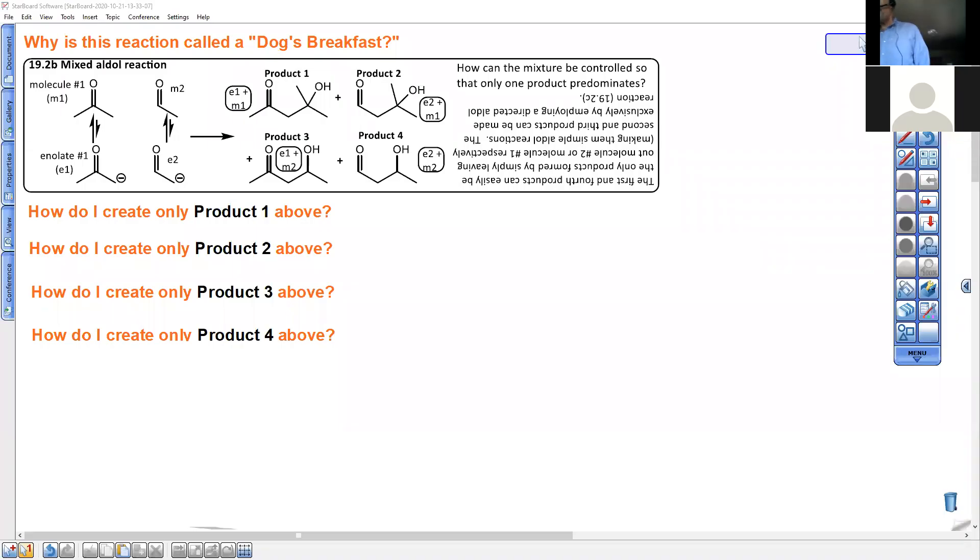On this screen, we have a mixture of two alpha hydrogen containing species. This first one has alpha hydrogens here and here, and this one has alpha hydrogens here. If they are mixed together in the presence of a base, which will create almost equal amounts of these two enolates.